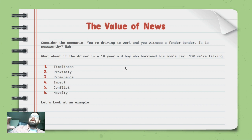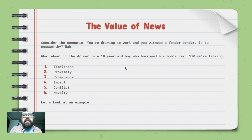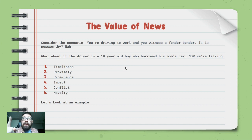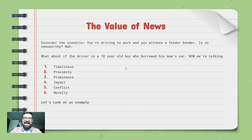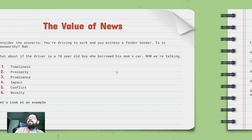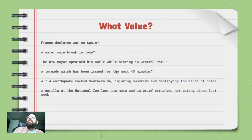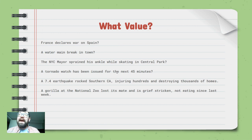Consider this scenario: you're driving to work and witness a fender bender — that's not really newsworthy. But what if the driver is a 10-year-old boy who borrowed his mom's car? Now it's novel, it may have shut down traffic, and now we have a news story. Another example: France declares war on Spain — that's conflict and impact on a global scale.